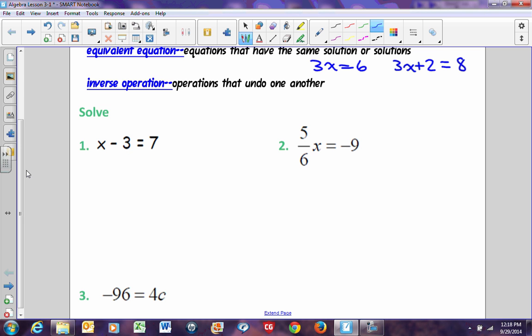Every equation is like a teeter-totter. It has a balanced point in the middle. Your equal sign is the division line between one side of the equation and the other side of the equation. Right now, my equation is balanced because x minus 3 equals 7. If I was to do anything to one side of the equation, in order to keep that equation balanced, I must do the exact same thing to the other side of the equation.